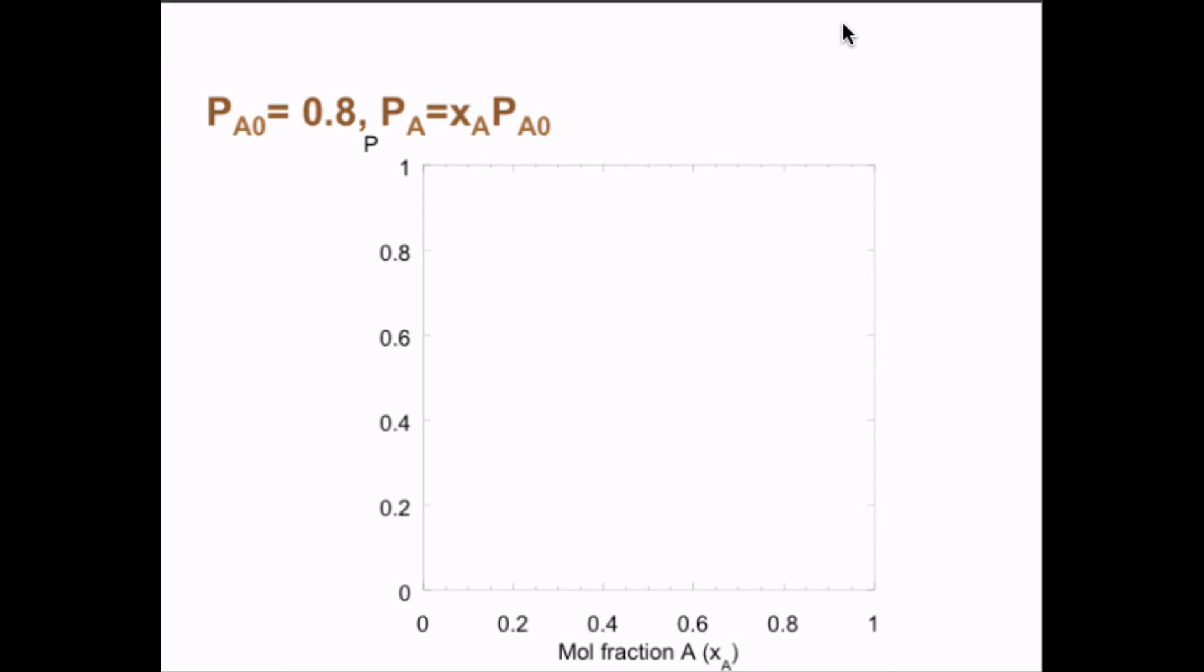What we get is that we have P_A0 equals 0.8, and we get a simple linear curve here. P_B equals x_B times P_B0, or 1 minus x_A times P_B0. So we get a straight line again up to P_B0 equals 0.3, like that.